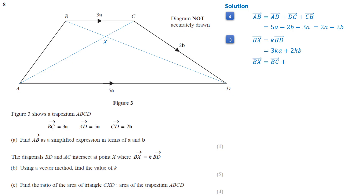Vector BX can also be expressed as the sum of vectors BC and CX. Since CX lies along the line CA, we can express it as lambda times vector CA. Substituting the corresponding values, vector BX equals 3a plus 2·lambda·b minus 5·lambda·a.